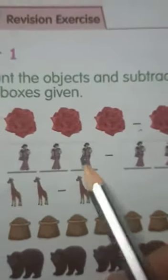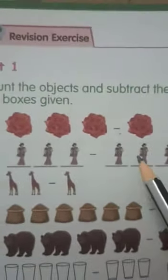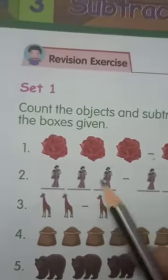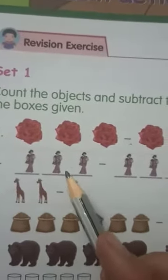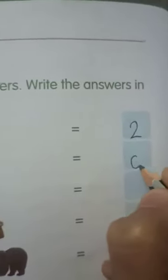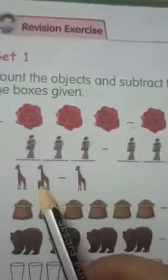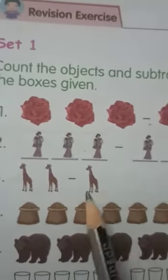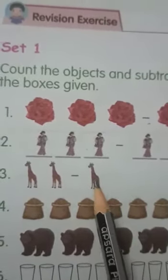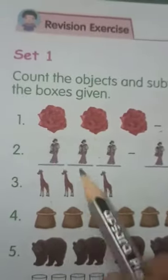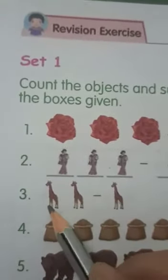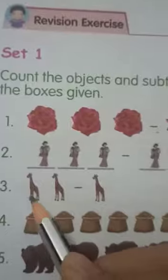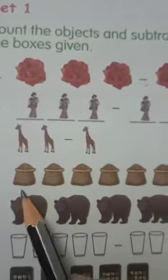Next, here we have three pictures — one, two, three — so we have to subtract three from three. If we subtract a number from itself, we will get zero. Next, we have two giraffes and here only one. We have to subtract one from two, so we have only one left. Write here one.